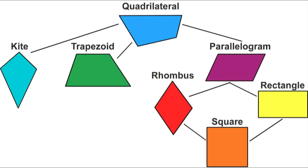Quadrilaterals! They are polygons. Quadrilaterals have four sides. We can classify them like a family tree — they're all related and different. Let's see!